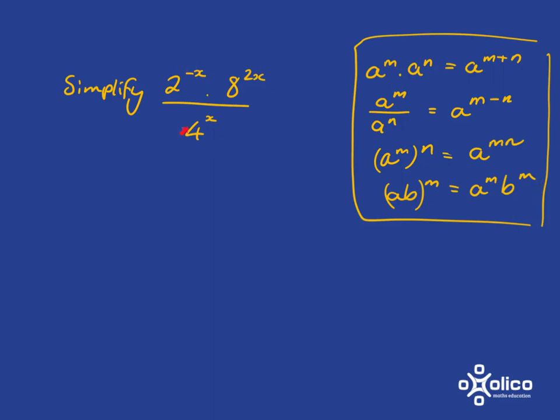So if we're asked to simplify something like this, we can apply these rules. The only thing to note is the rules that go something like this: if you've got two things multiplied together, you add the exponents. If you've got two things divided, you subtract the exponents. It only works if you've got the same base.